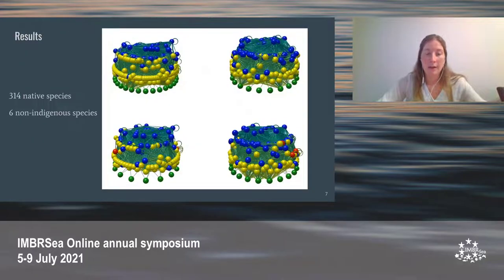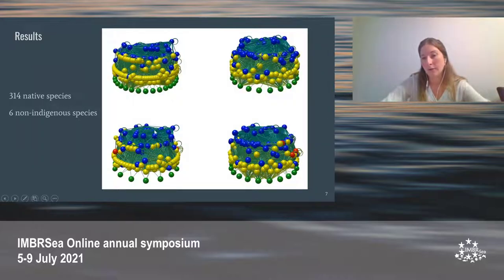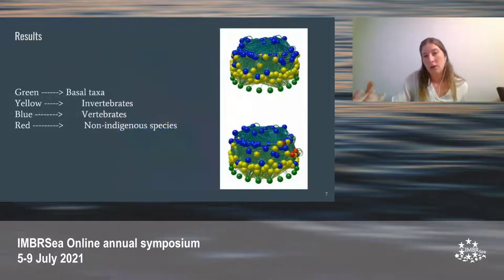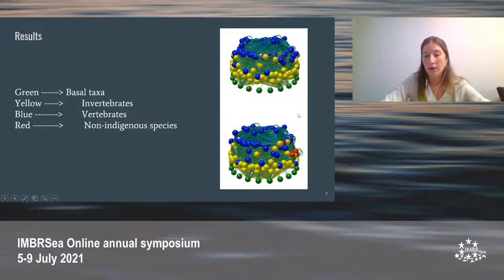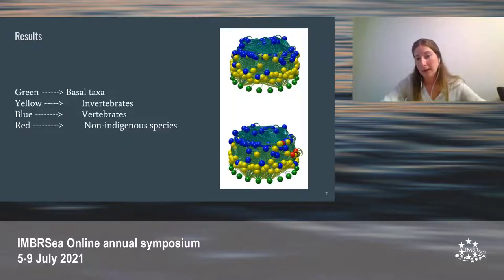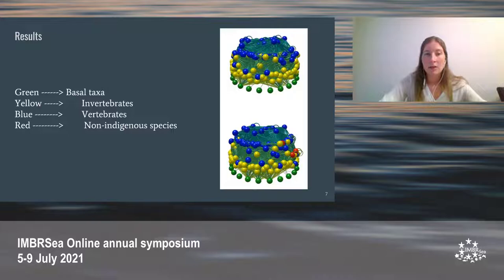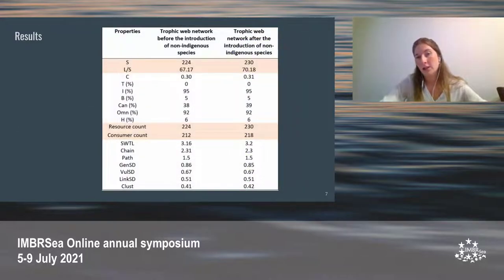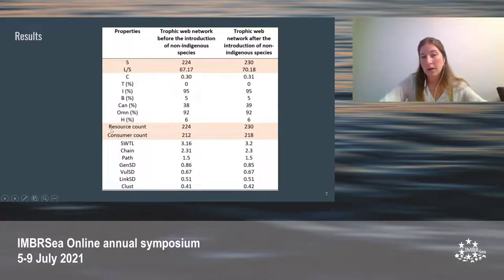We found a total of 320 species, six of which were non-indigenous. The food web networks and trophic web networks before and after the introduction of non-indigenous species are shown here. In the trophic web networks, nodes represent trophic species with different colors depending on the taxonomic level, and links represent predator-prey relationships. As the visual representations don't show a lot of difference beyond more species, we focus on the properties. The table shows that some properties slightly changed with the introduction of non-indigenous species, such as trophic species, links per species, resource count, and consumer count, all increasing.